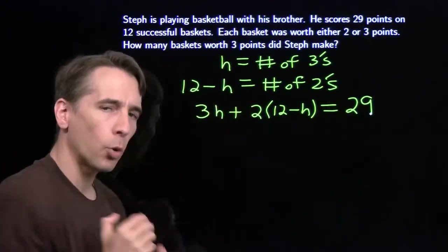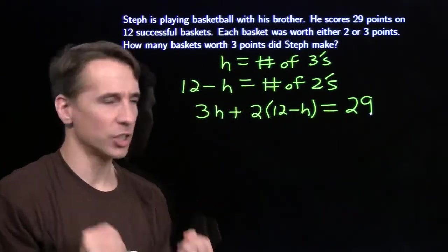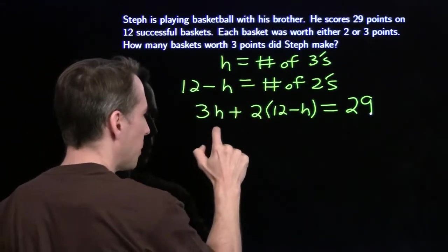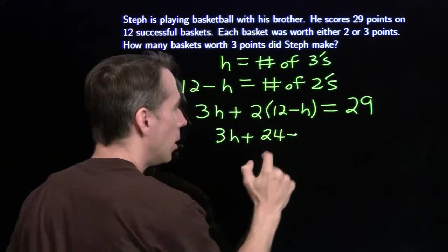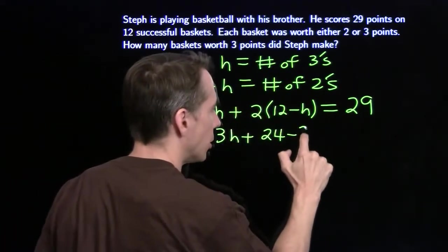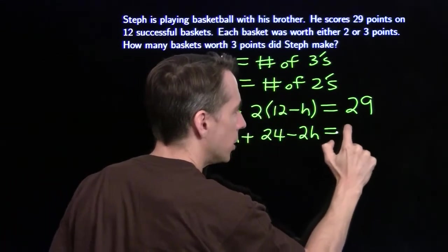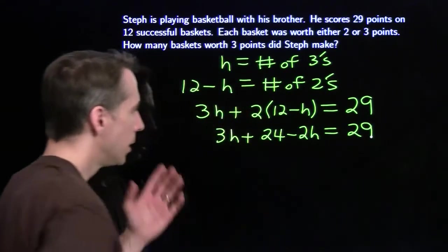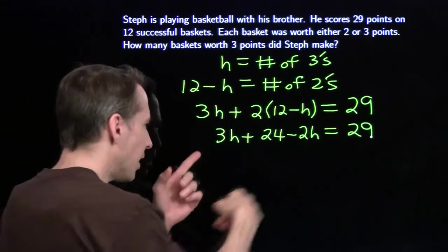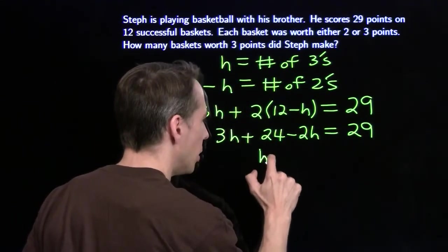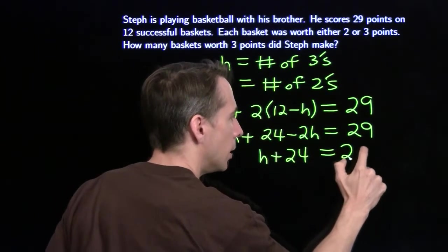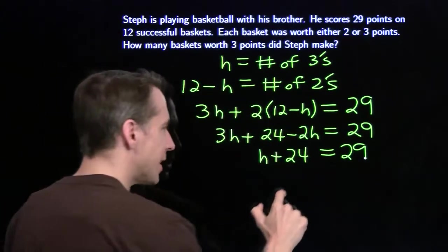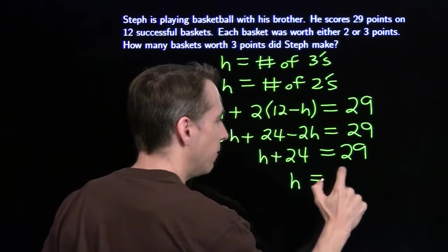So now we have an equation that we can solve for h. We're going to first expand that product, 2 times 12 is 24 minus 2 times h. And all this still equals 29. Now we'll simplify the left hand side, 3h minus 2h leaves us h plus 24 equals 29, which tells us that h has to be 5.